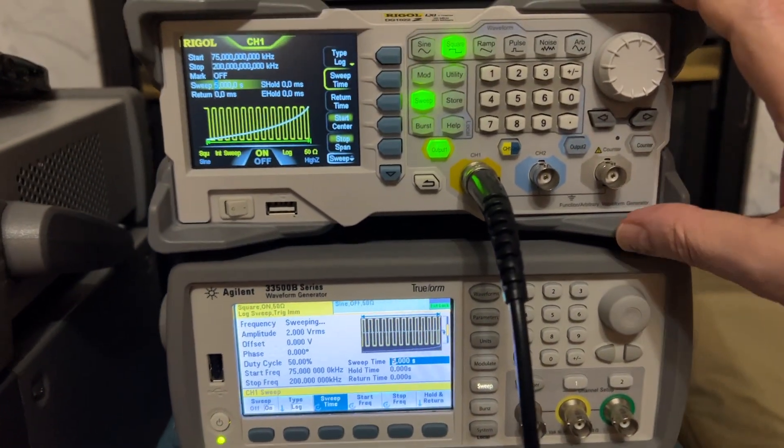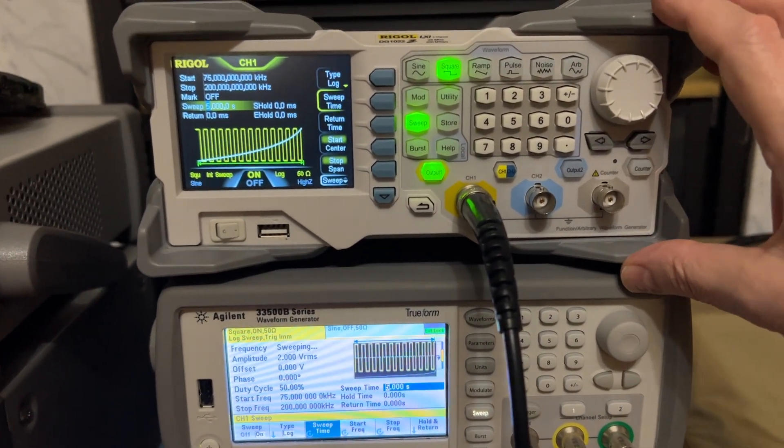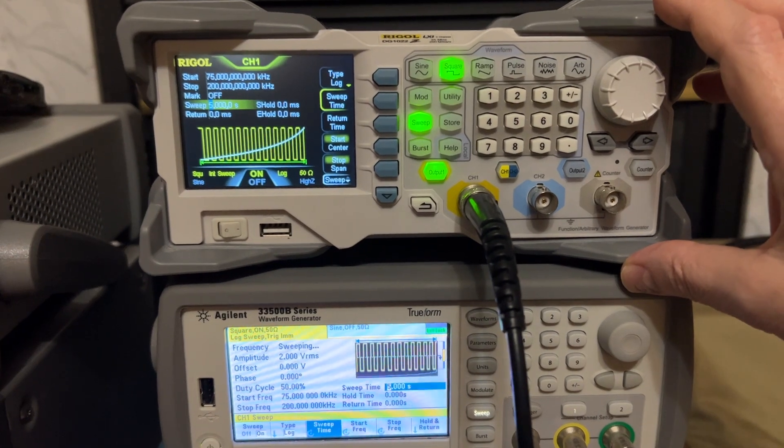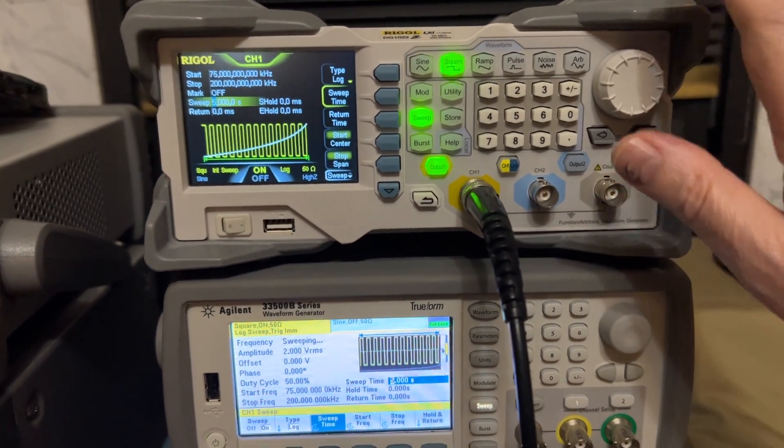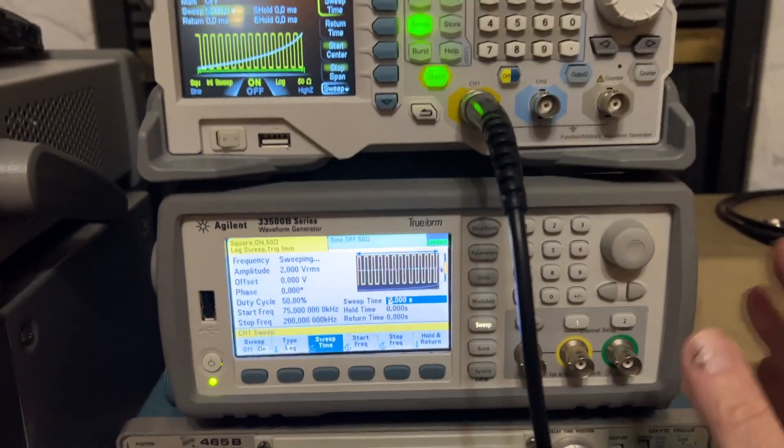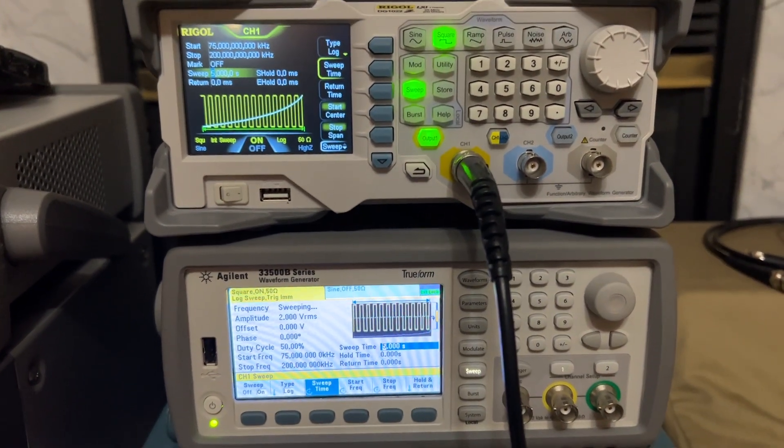They're both set to do a sweep of a square wave. This top instrument is 25 megahertz and this is 30 megahertz, so they're roughly both in the same class.